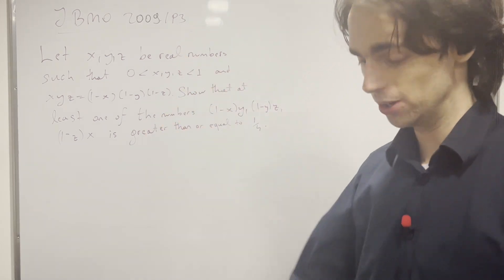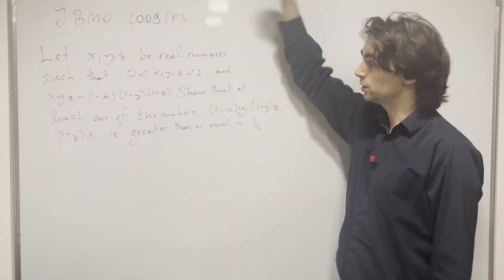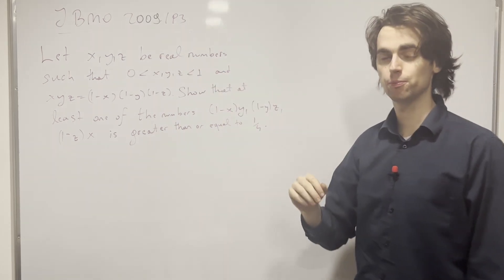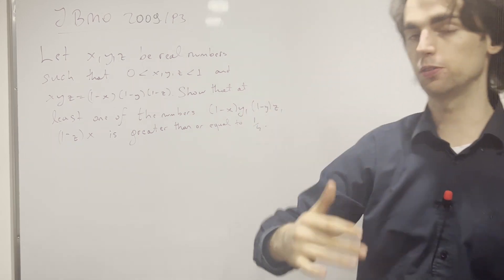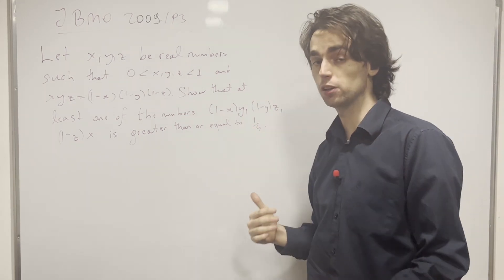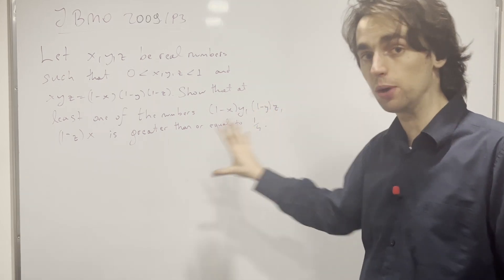Hello fellow problem solvers. Today we are going to be doing a problem from the Junior Bank of Math Olympiad, 2009, problem number 3. This is a very good introductory algebra problem. You know, you've just worked on your basics of algebra and now you want to take it to actually working on some problems. This is a great problem for that.